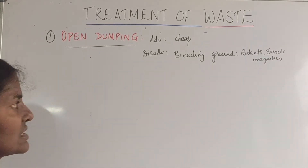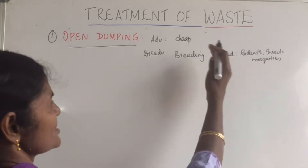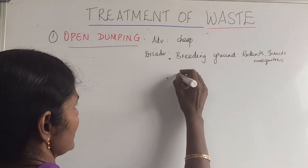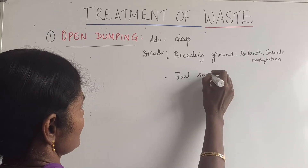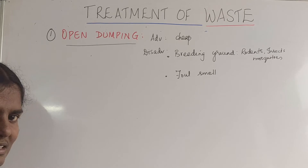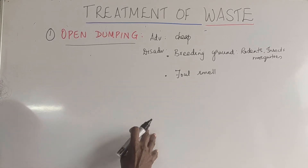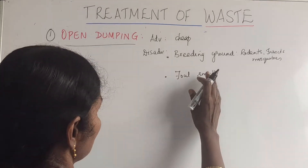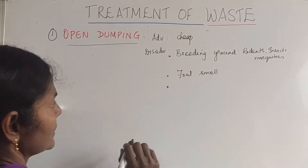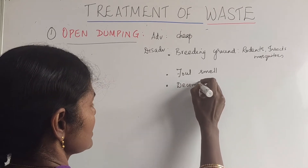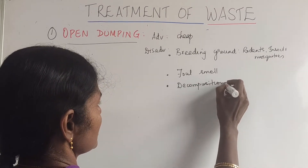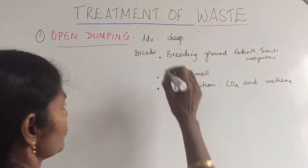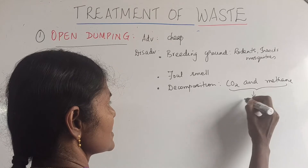All kinds of diseases can originate from this breeding ground. Then, as the waste starts decomposing, there is a foul smell that comes out, and if we happen to be in the direction of the wind near this place, we will have to face this foul smell. The decomposition also results in two gases — carbon dioxide and methane — and both these gases result in global warming. So these are the disadvantages of open dumping.